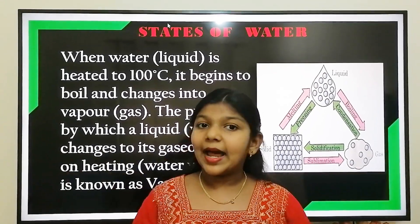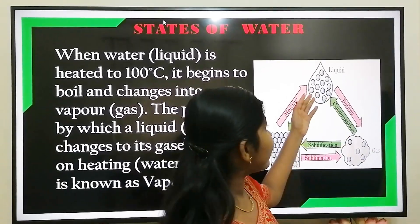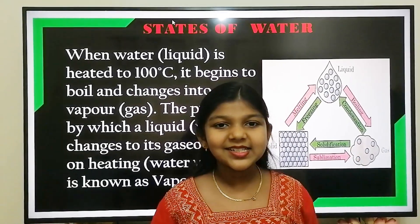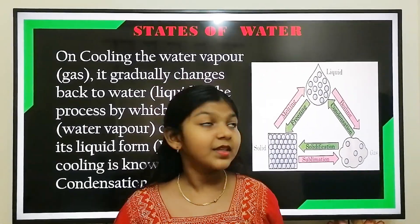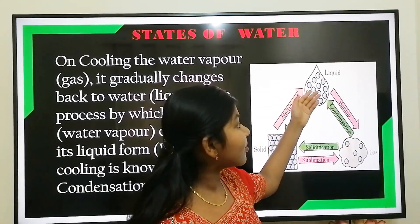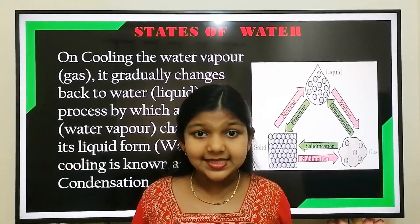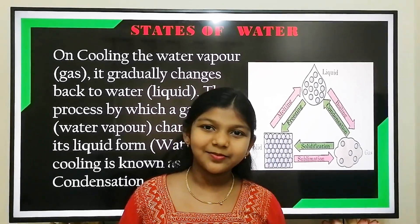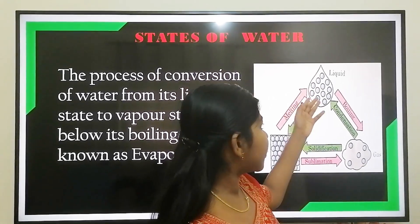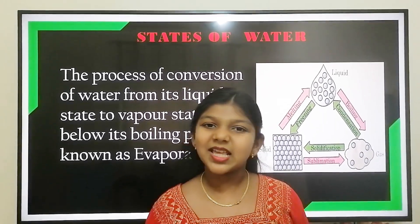When water is heated to 100 degree Celsius, it begins to boil and changes into vapor. The process by which the liquid state of water changes into its liquid state on cooling is known as condensation. That is, water vapor changes into water on cooling. The process of conversion of water from its liquid state to its gaseous state below its boiling point is known as evaporation.